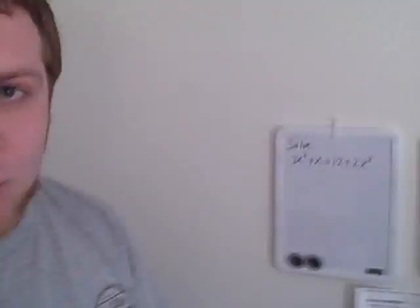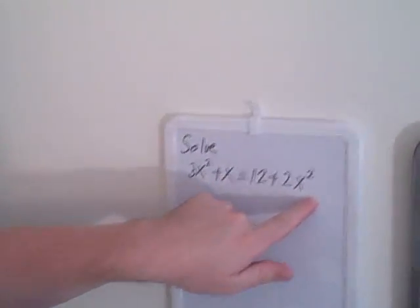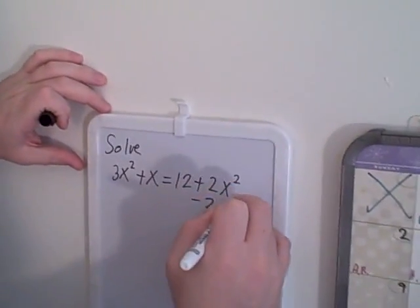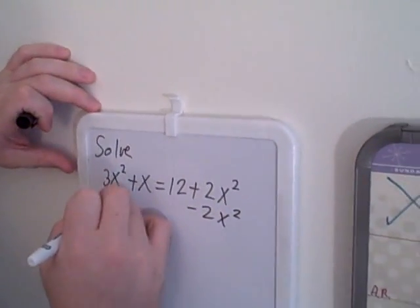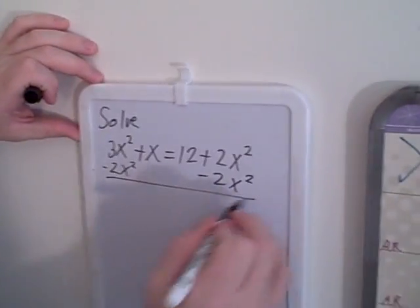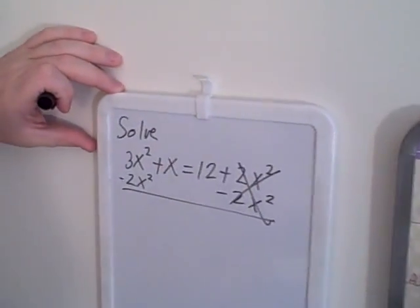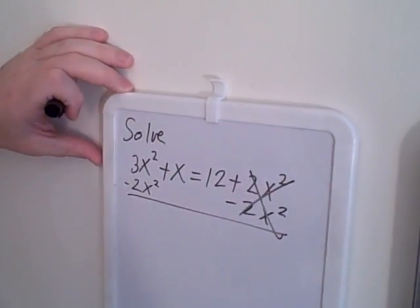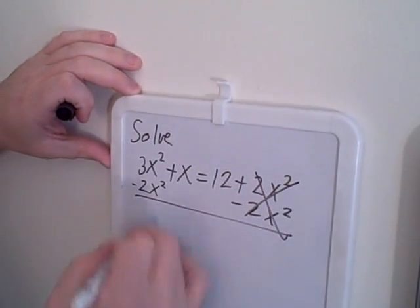First thing I want to do is combine like terms. We have an x squared over here, but on the right side we have an x squared over here. So what I'm going to do is subtract 2x squared from each side of the equation. When I do that, these x squared cancels. 3x squared minus 2x squared will just give us 1x squared.